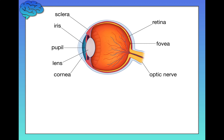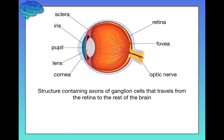Finally, we have the optic nerve. The optic nerve is a structure containing axons of ganglion cells. Most importantly, it takes those electrical signals from the fovea and the retina and transmits that information to the rest of the brain.